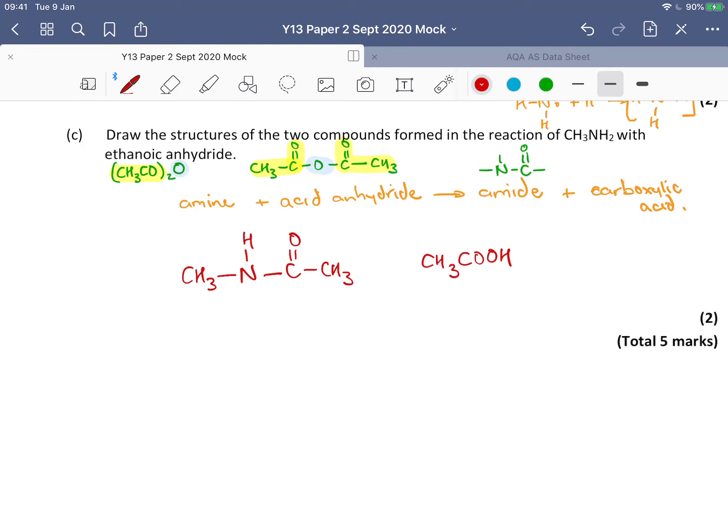Now, arguably that carboxylic acid depends on how much amine we've got, but you could have a neutralization reaction there. So you could end up actually with a carboxylate ion and an ammonium ion. But let's not be too complicated here. Those are the two compounds formed in our reaction. If we react our methylamine, that's what we've got, methylamine, with ethanoic anhydride, we would make this amide and this carboxylic acid.